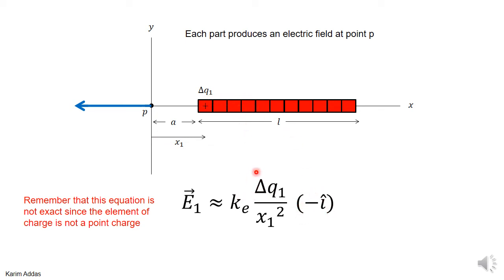Now remember that this formula, you cannot use this formula exactly in this case because this size is not zero. This is not a point charge. When you cut up a line into 11 parts, each part is not a point charge. So this is an approximation. We're doing this just to illustrate the idea, the qualitative idea.